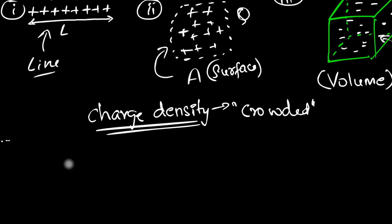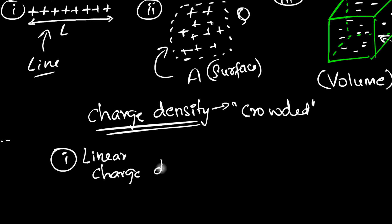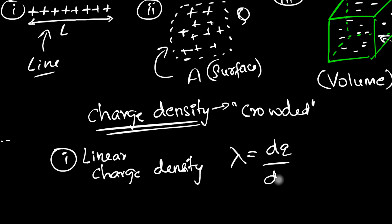The first is linear charge density, with symbol lambda. Lambda equals dq divided by dl, where dq is a tiny amount of charge and dl is the length along which the charge is distributed. This has units of coulombs per meter. That's how we define linear charge density.